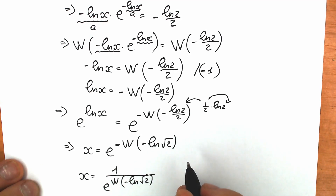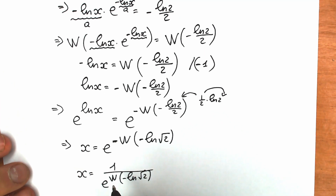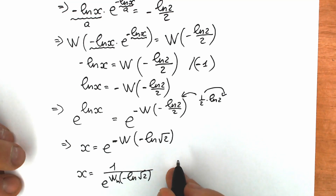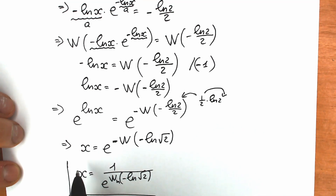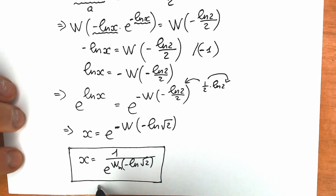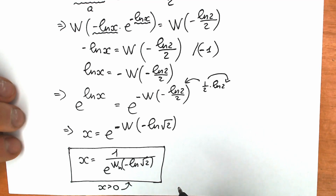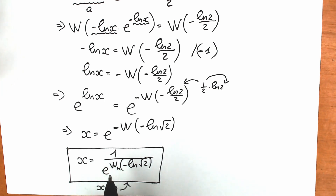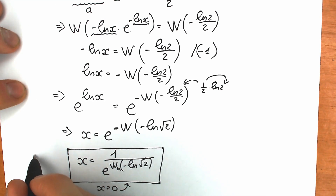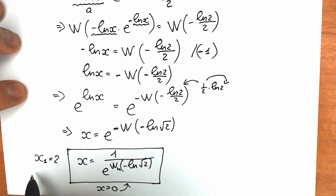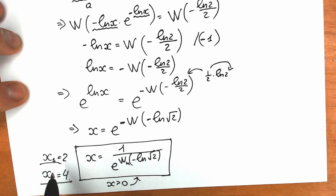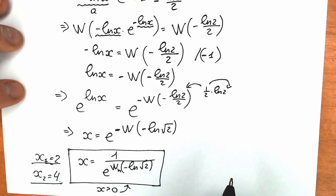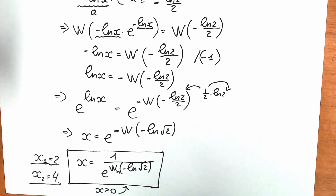A lot of students want to see the actual answers, because this Lambert W function has multiple indices. According to the solution for the case when x is positive, when we evaluate this expression using the different branches of W, we get two answers: x₁ equals 2 and x₂ equals 4. A lot of students forget about the second root x₂ = 4, but we do have it here.